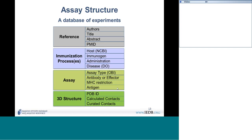If it's a T-cell experiment, we describe everything we can about the effector cells: what tissue they came from, whether they were purified CD4 or CD8 cells, whether they were re-stimulated, and we describe the re-stimulation process. For T-cell experiments with known MHC restriction, the MHC restriction is entered, and every MHC binding and MHC elution experiment is captured.